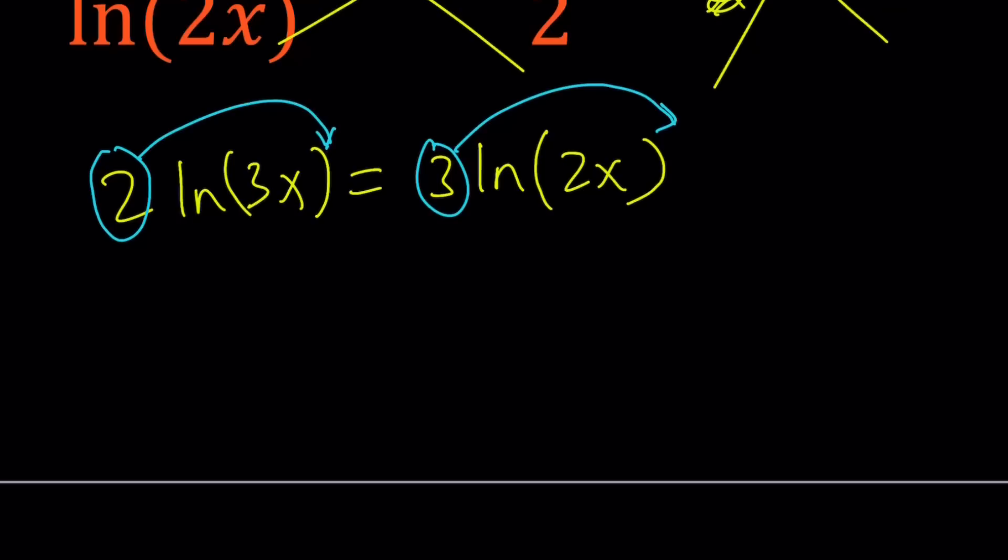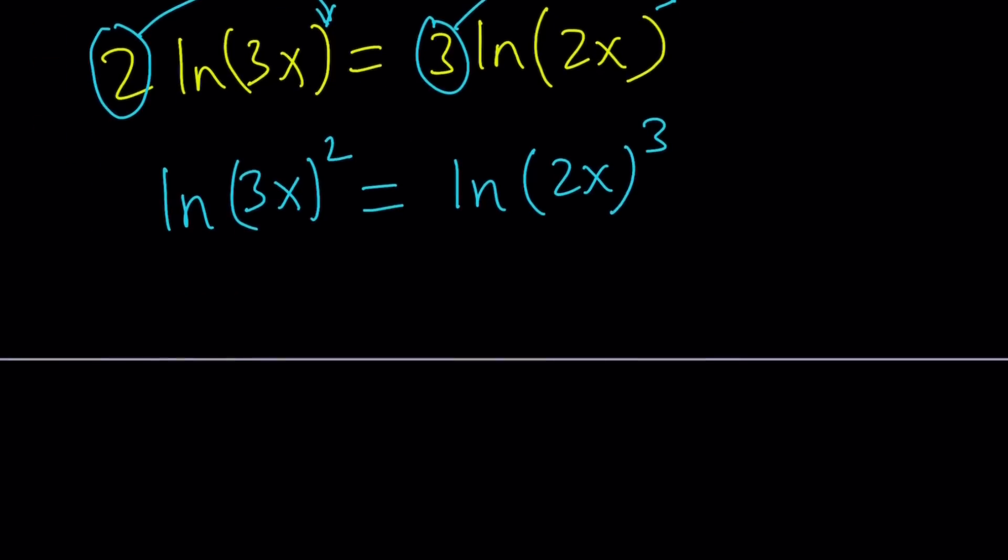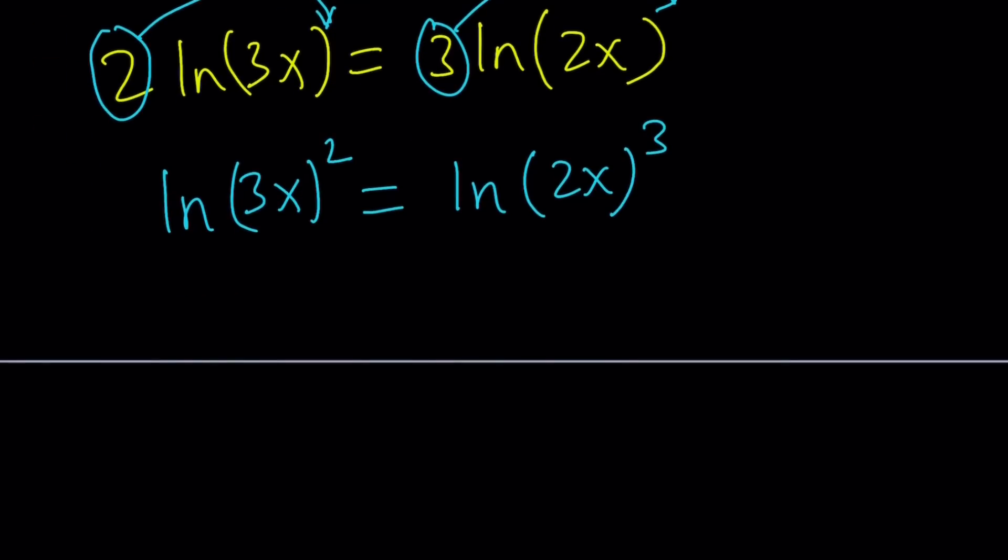Put it up like this and like that. So this is going to give you ln(3x)² equals ln(2x)³. Wow, that was easy, right? Well, yes. If you can see it, it is easy. So what am I going to do next? Perform the exponentiation, which is a fancy word, right? And then set the numbers equal to each other.